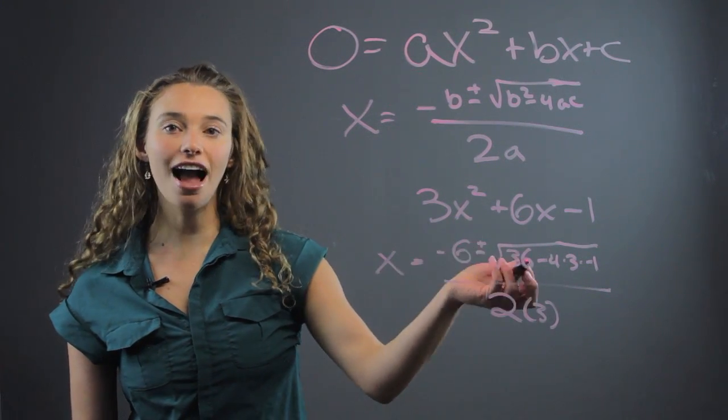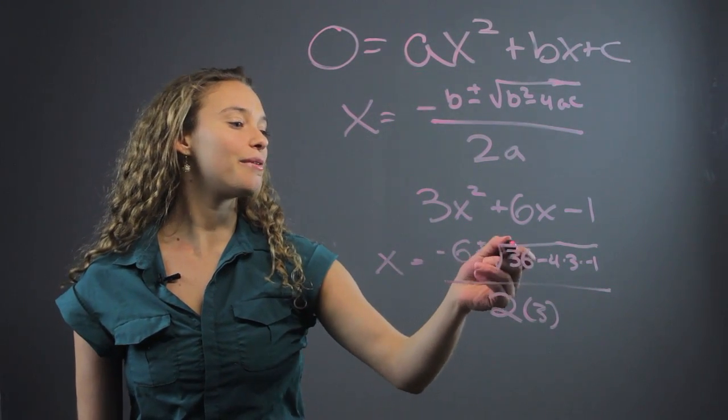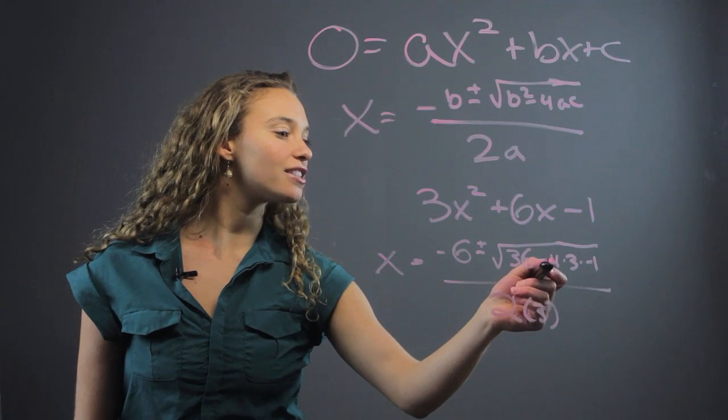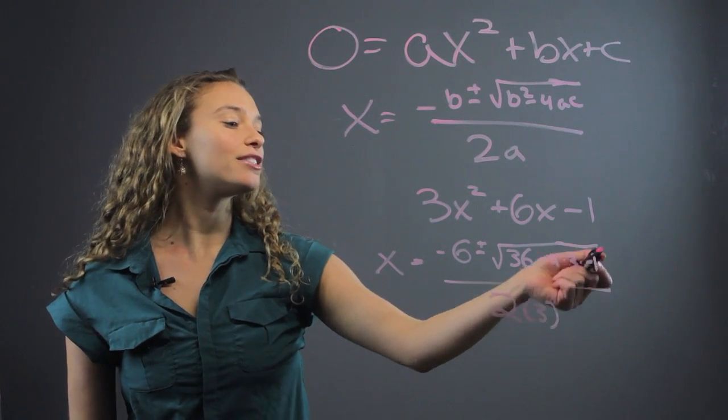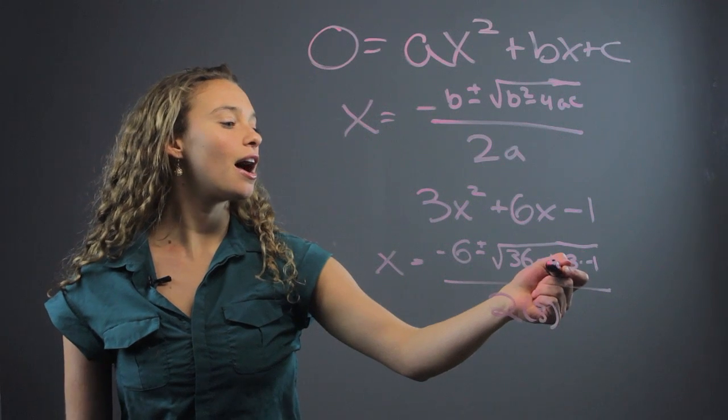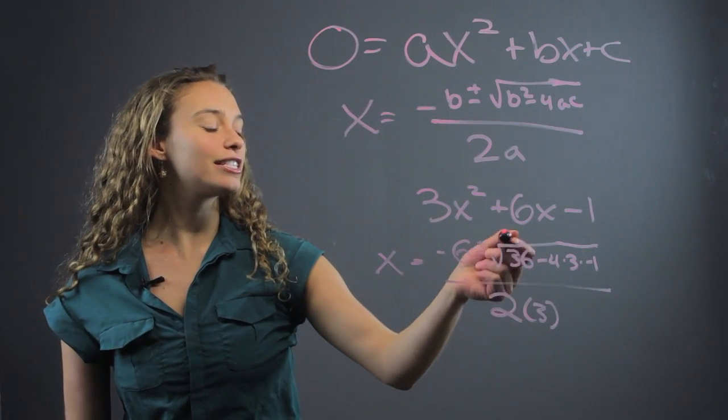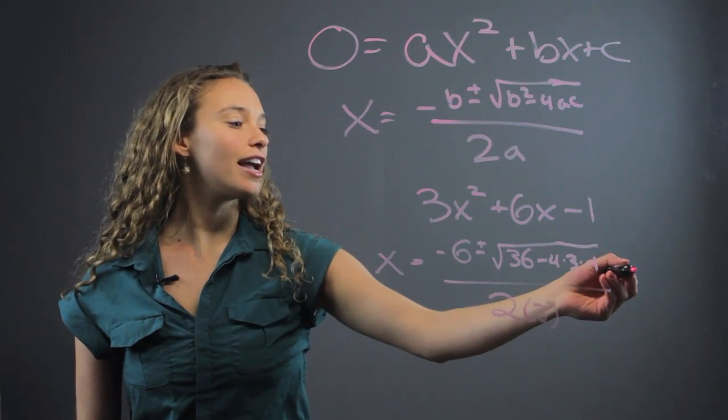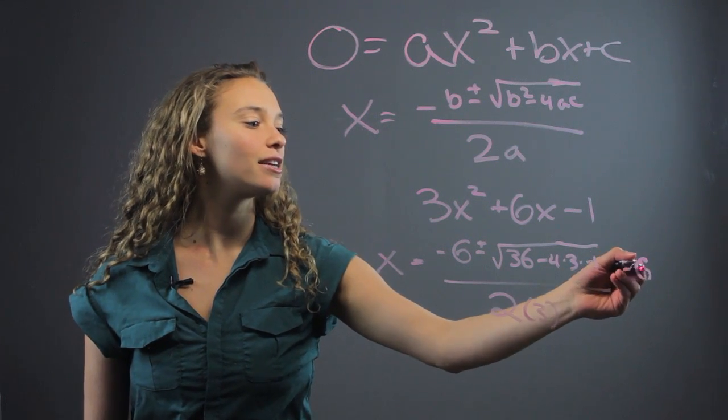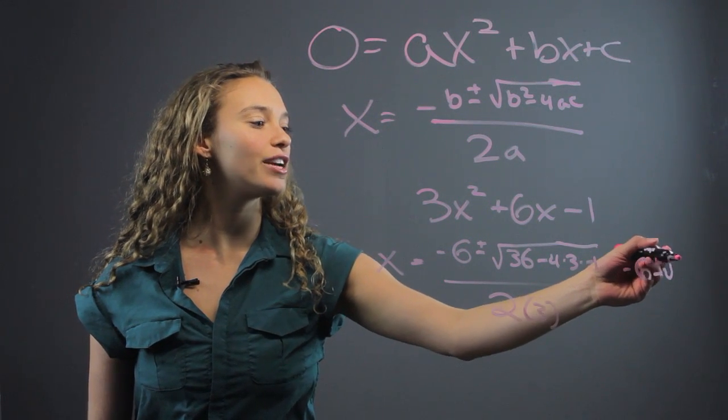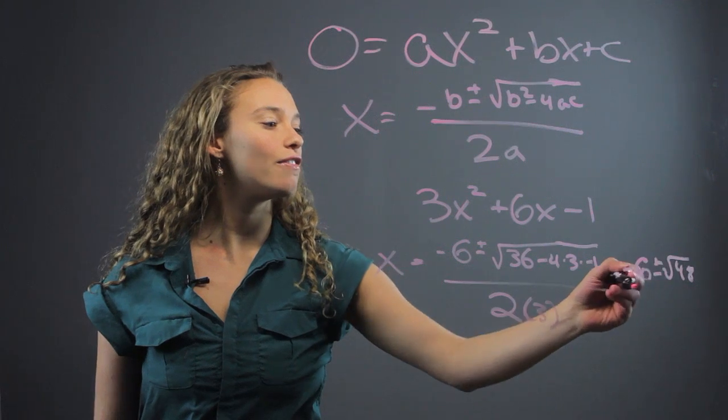And then we multiply it all out and we solve. We're going to do 36 minus 4 times 3 is 12 times negative 1. So, it's actually going to be plus 12. So, 36 plus 12, right? That's going to give us 48. So, we're going to have negative 6 plus or minus root 48 all over 6.